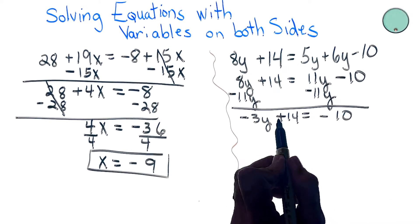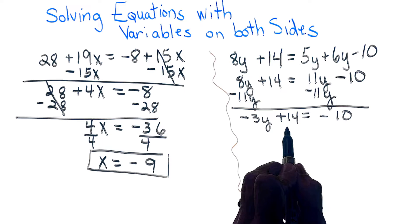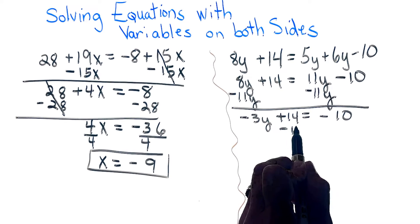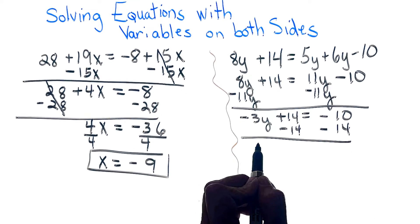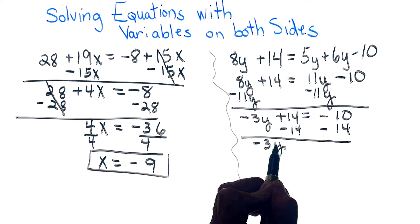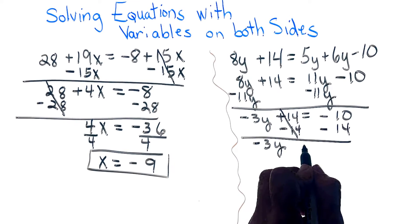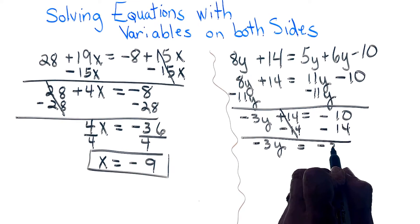Now, I know we always add or subtract to get the variable by itself. So I'm subtracting 14 from both sides. And I have a negative 3y. This cancels out. Equals a negative 24.